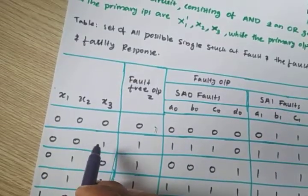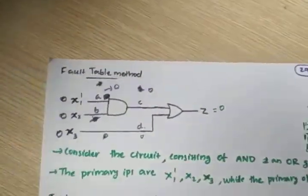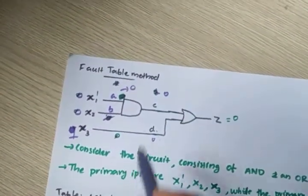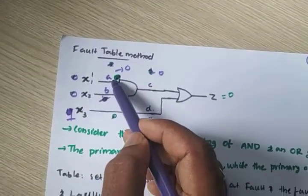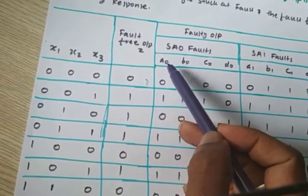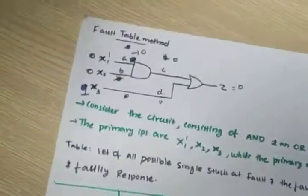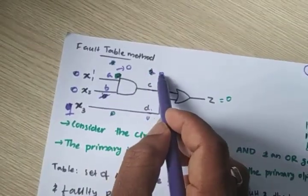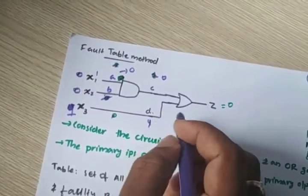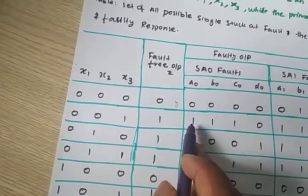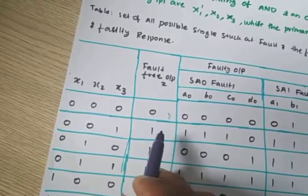For input 0 0 1: x1 bar is 1, AND with x2=0 gives 0, OR with x3=1 gives output 1. So fault-free output for 0 0 1 is 1. With a0 (a stuck at 0): a=0 always, AND output is 0, OR with 1 gives 1. So a0 output is also 1.